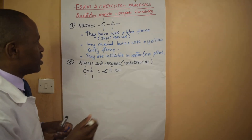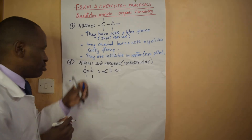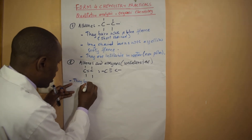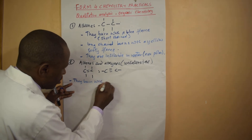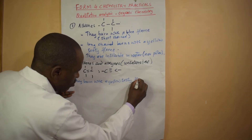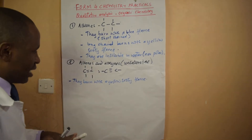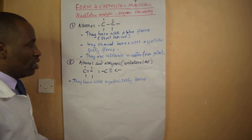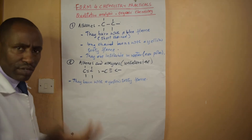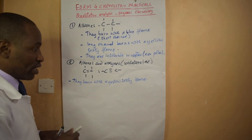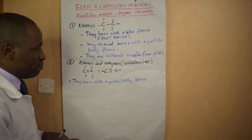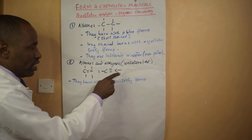As far as burning is concerned, alkenes burn with a yellow sooty flame — the same reason applies: the carbon-to-hydrogen ratio is higher. For alkynes, you may expect them to burn with an even sootier flame because of their even higher carbon-to-hydrogen ratio compared to alkenes.